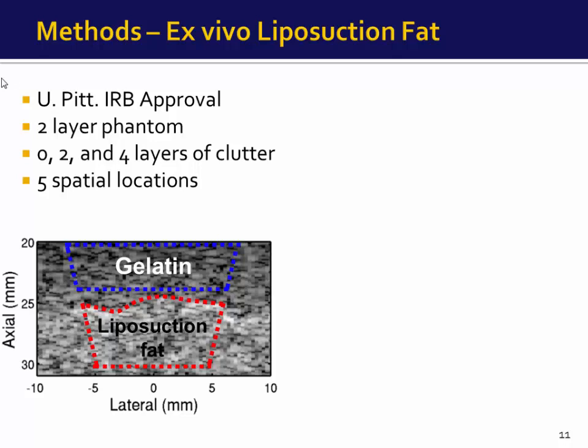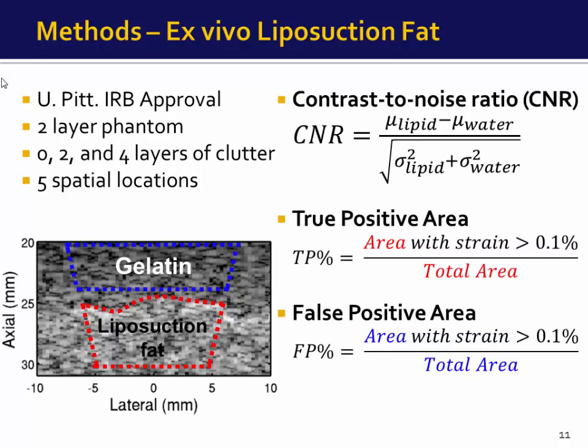Next, we assessed a biological tissue phantom using liposuction fat obtained with IRB approval. We generated a two-layer phantom with gelatin on top and liposuction fat on the bottom, imaged through zero, two, and four layers of clutter at five spatial locations. We quantified TSI data using three metrics: contrast-to-noise ratio, true positive area — defined as the area with positive strain greater than 0.1 percent within the lipid region divided by the total lipid area — and false positive area, defined similarly within the gelatin background region.